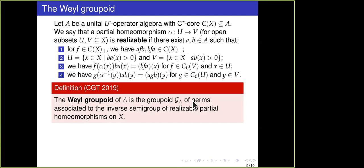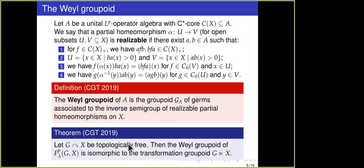I don't have time to go into all the details, but this is a naturally associated groupoid to the Banach algebra. The main point is that if you start with a topologically free action and form the cross product, and then look at the Weyl groupoid of that cross product, you get back the transformation groupoid of your action. This is a difficult, deep structural result for cross product LP operator algebras.